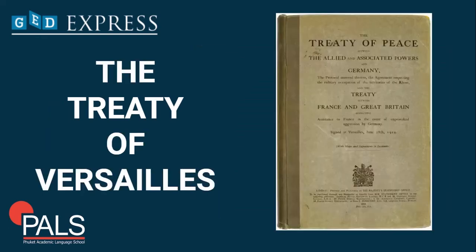So, what about the Treaty of Versailles? The Treaty of Versailles was signed between the Allied powers and Germany on June 28, 1919, a few months after the armistice. This officially ended World War One. The Treaty was extremely harsh on Germany — it forced Germany to accept full responsibility for causing all the loss and damage of the war. Germany was also forced to disarm, give up land to France, and pay reparations of 132 billion marks.